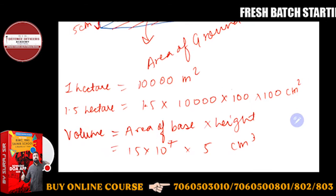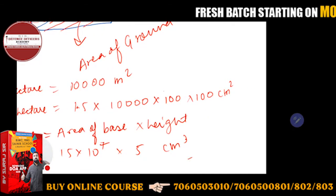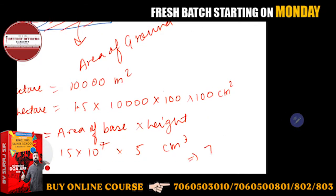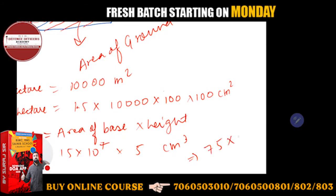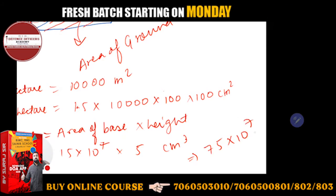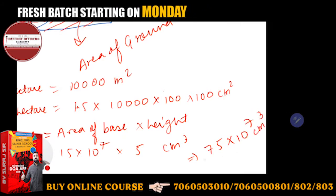So what will be the answer? The answer will be 75 into 10 to the power 7 cm cube will be its volume.